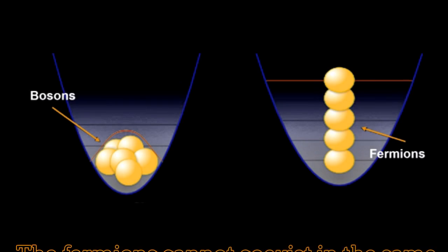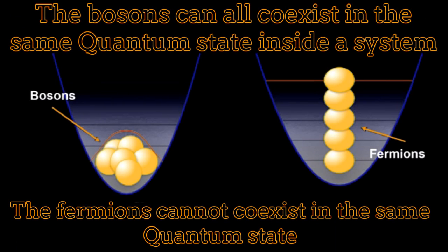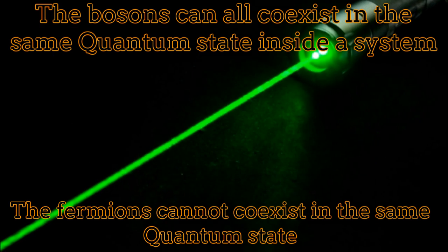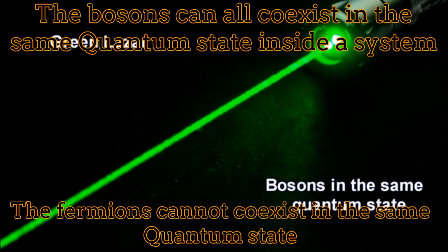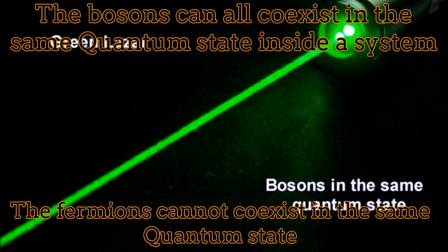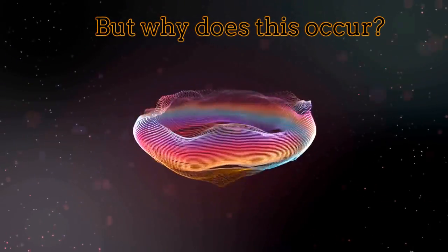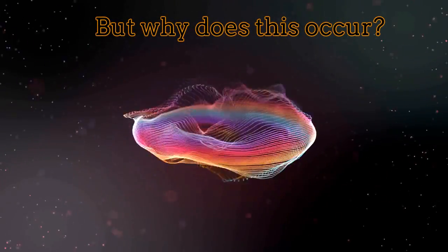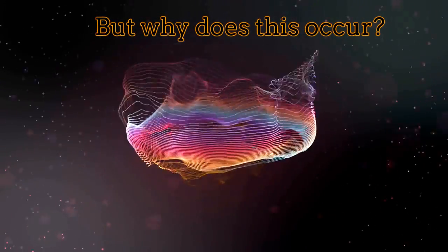Bosons and fermions behave in different ways when they interact inside some environment. While bosons can all coexist in the same quantum state when they interact with each other, this same doesn't occur with the fermions, which cannot coexist in the same quantum state. But why does this phenomenon occur? Is there any fundamental explanation about it?